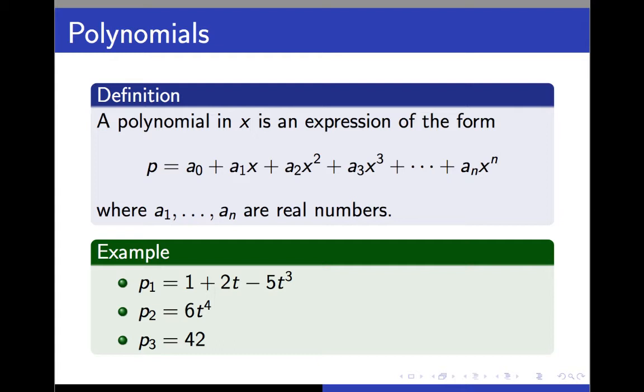The final example, P3, is a constant polynomial. The only term there is the x to the 0 term, if you will. So, numbers themselves are a special kind of polynomial.